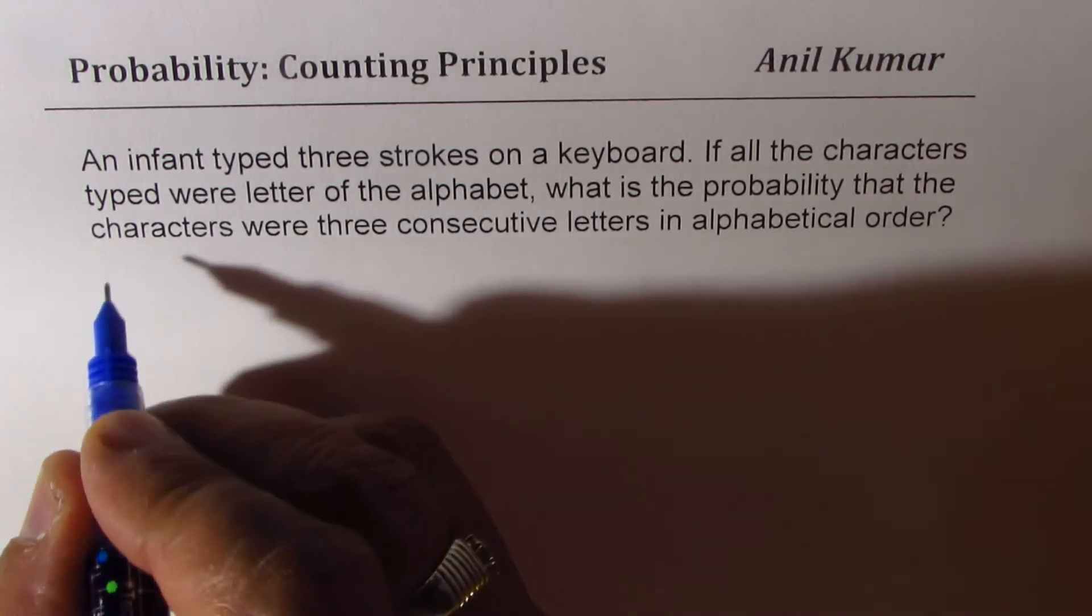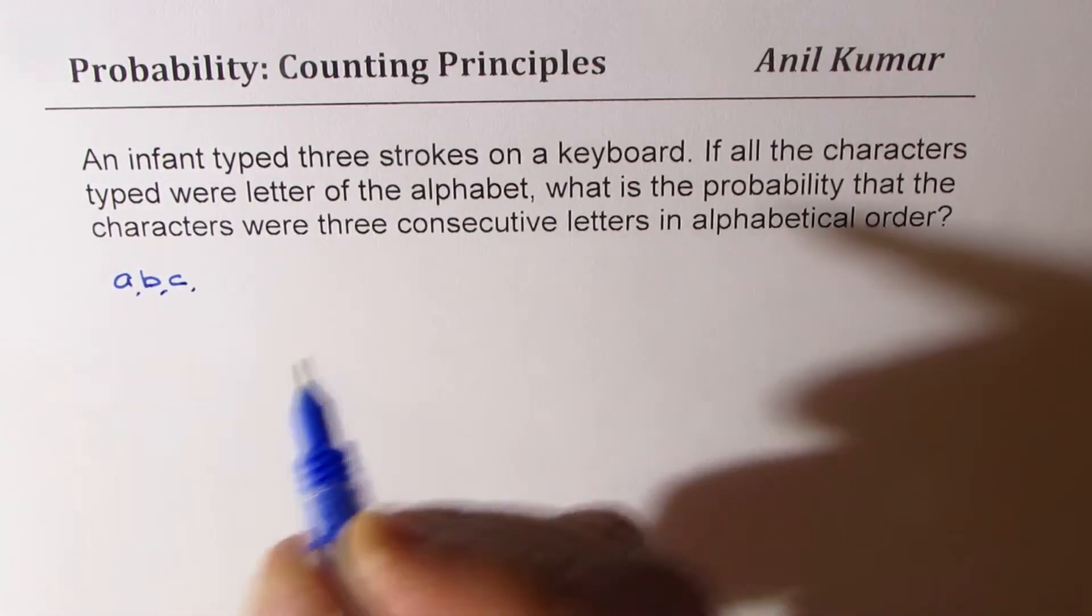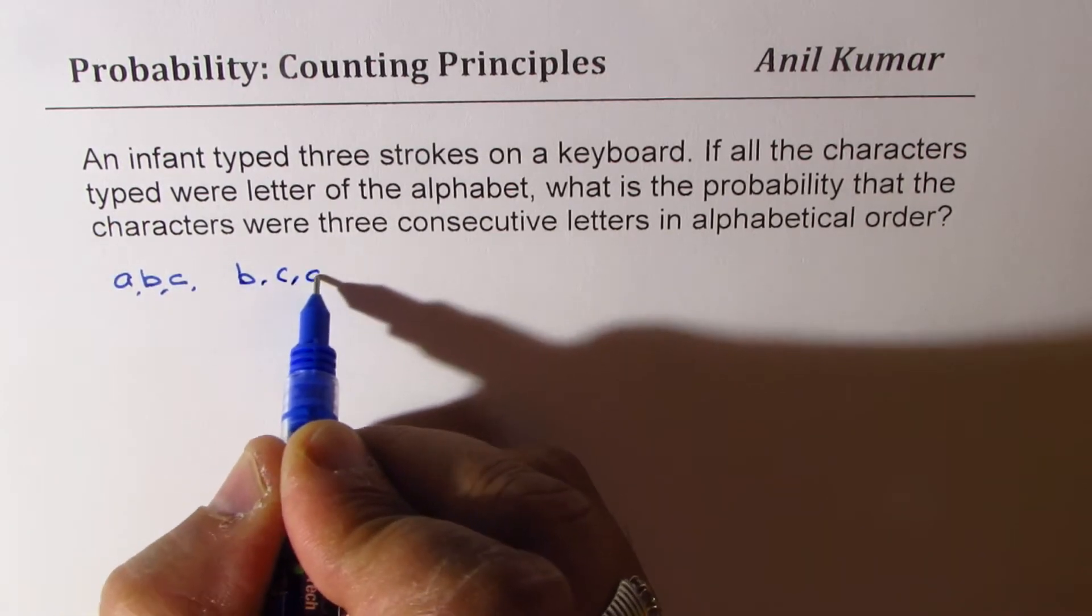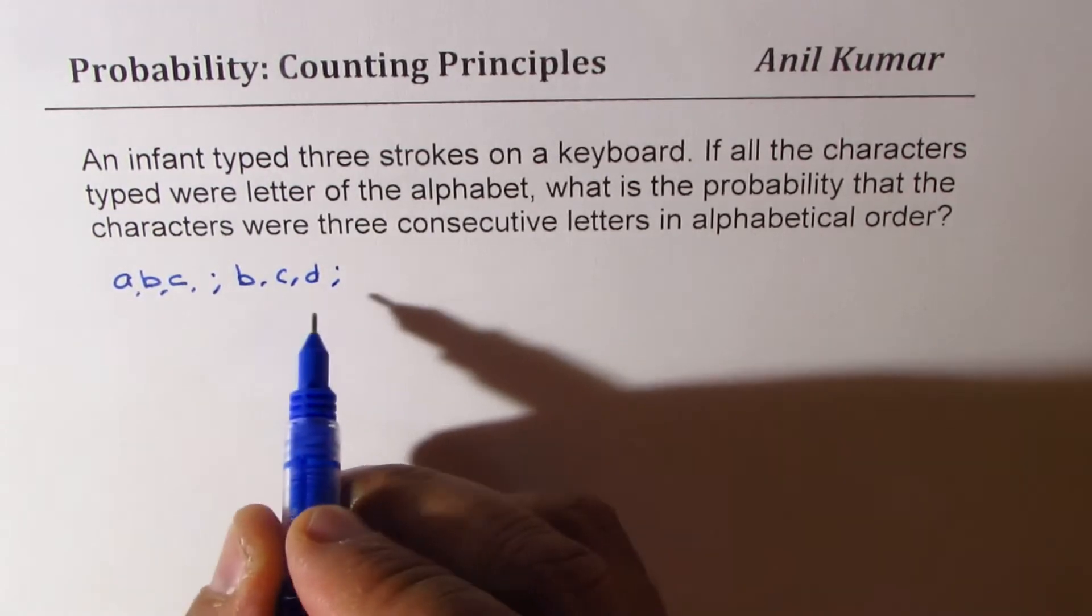That is to say, like A, B, C, right? Or it could be B, C, D, right? That way, in that order.